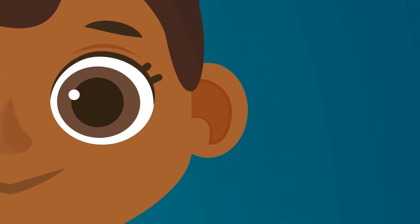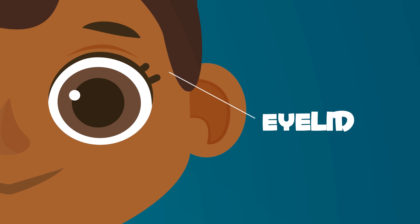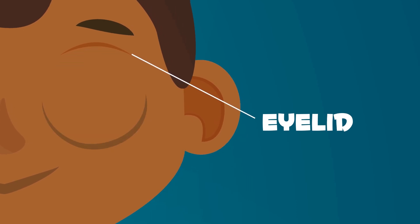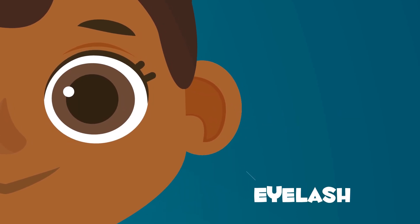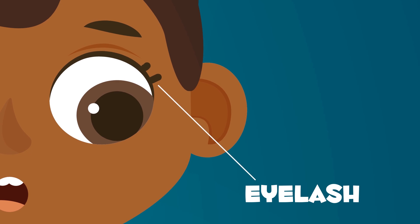Your eyelids are a muscle that allows you to open and close your eyes. Eyelashes are small hairs that protect your eyes from dust and dirt.